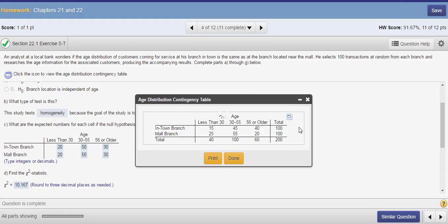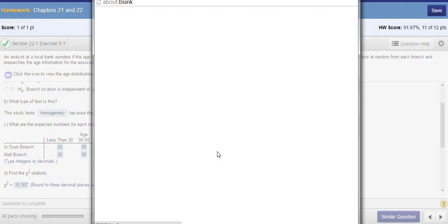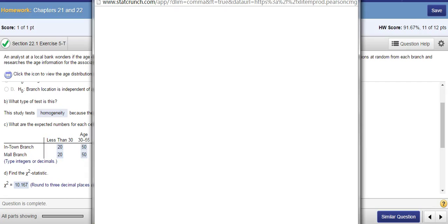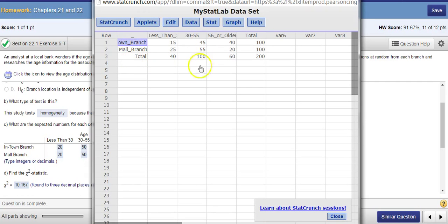So you open the table in StatCrunch. It's kind of slow today, so be patient. And then, after you open up the table, if they have the totals, you're going to delete the totals first. Because they give you the totals, they suppose that you're going to calculate the expected value by hand. But if you want to do in StatCrunch, you have to delete the totals.